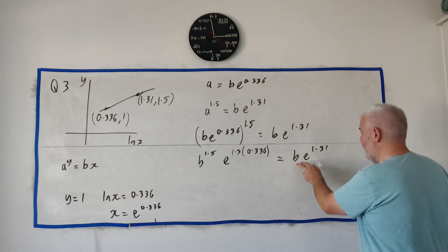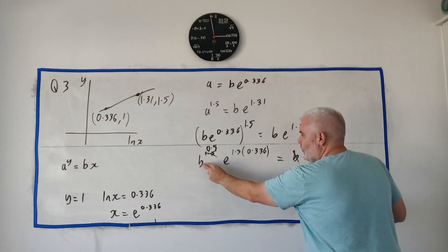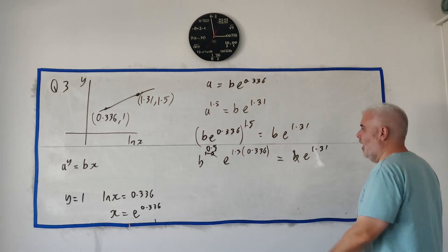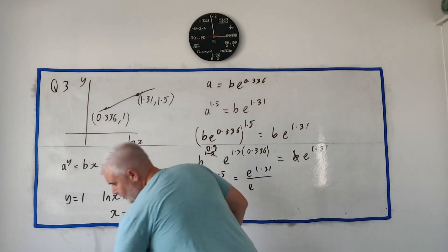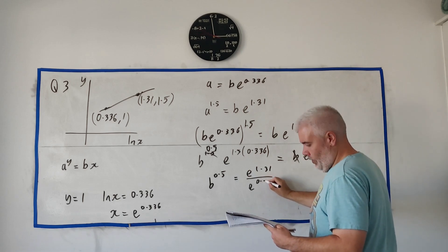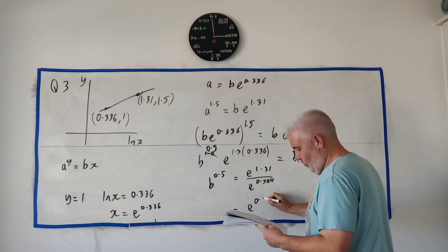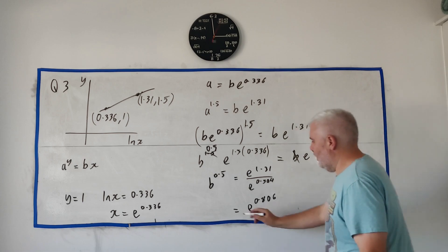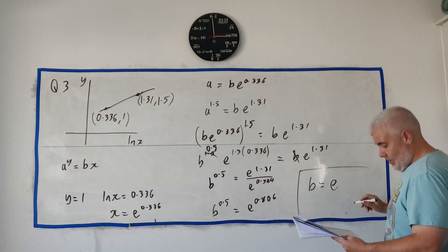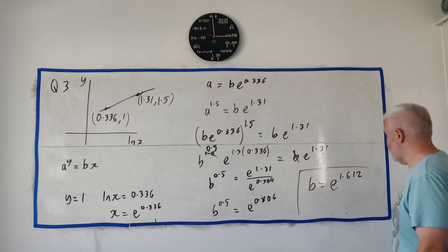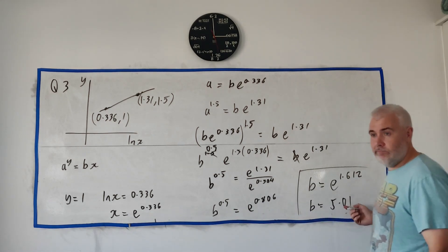From here, we can just start cleaning it up with some power rules. 1.5 goes into both of these. That's b to the 1.5, and e to the 1.5 multiplied by 0.336. Equals b e to the power of 1.31. We only have b. Let's just get the b's together. Divide both sides by b. b to the power of 0.5 will be left. Divide that over here. We're left with b to the power of 0.5 is equal to e to the 1.31 over e to the 0.504. These just subtract. This one minus that one is e to the power of 0.806. Just square both sides. We'll be left with b is equal to e to the power of 1.612. That's b. b is equal to 5.01 or close enough to 5.